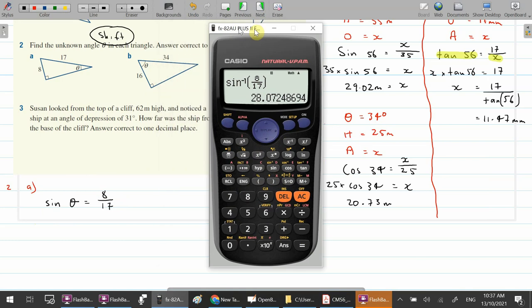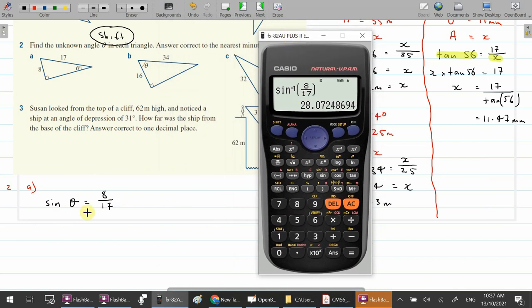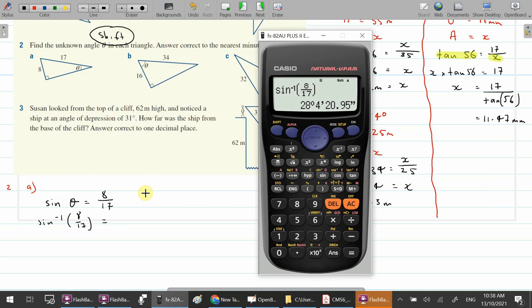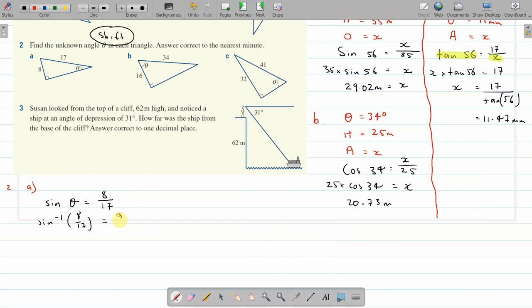Shift, 8 over 17, close the bracket. Angle is 28 degrees. Nearest minute. So nearest minute means we press the degree minute button. There it is. 28 degrees 4 minutes. 20.95 seconds. Well, that's not more than 30, so it's 28 degrees 4 minutes. So sine to the minus 1 of 8 over 17 is 28 degrees 4 minutes.